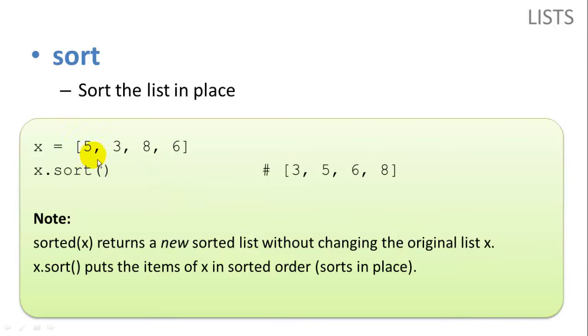Sort will actually do an in-place sort. So the new list you get back, our list x here, is going to become a sorted list. So unlike the sorted function, sort is an in-place sort. So it actually changes the order of the items in list x.